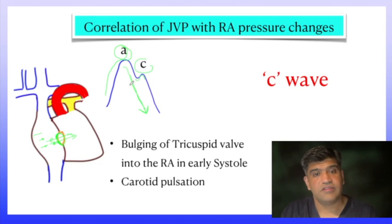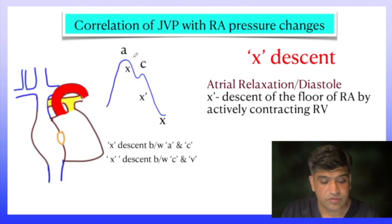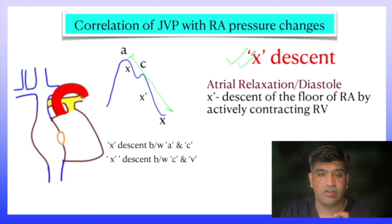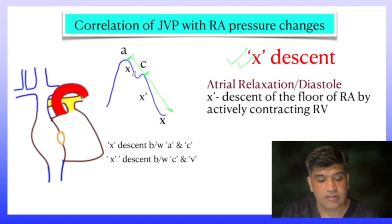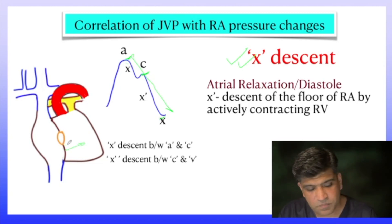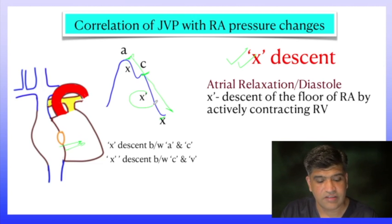After the C wave, the RA continues to relax and descends fully — this full relaxation is what we call the X descent. The X descent means atrial relaxation, or atrial diastole. The part from A until the bulging of the tricuspid is X, and from C right down to the bottom is what we call the X prime descent. The RV contracts and pulls the RA floor downwards, causing further relaxation — that is the X prime descent.